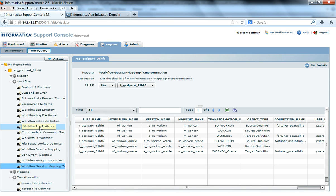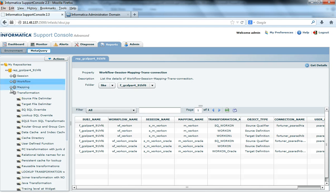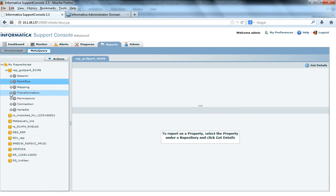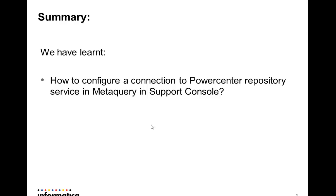For example, I need to get workflow run statistics — I can get it. What are the workflow log directories configured? I can get it. Much of the metadata related to PowerCenter repository service can be extracted through the metaquery tool after connecting in the support console. We have learnt how to configure a connection to a PowerCenter repository service in the metaquery inside the support console utility, and we have seen how to fetch the information or the metadata related to PowerCenter repository service.